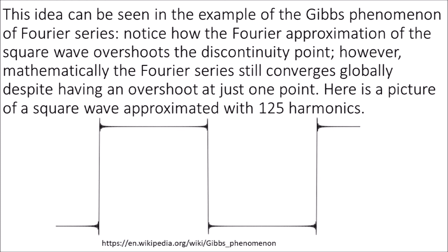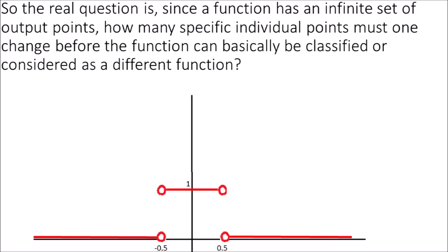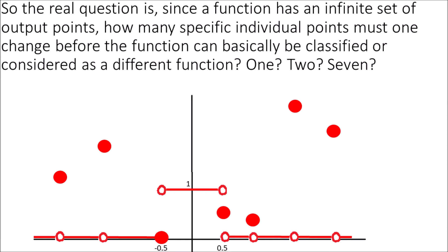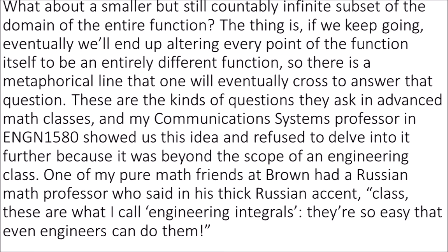This idea can be seen in the example of the Gibbs phenomenon of Fourier series. Notice how the Fourier approximation of the square wave overshoots the discontinuity point; however, mathematically the Fourier series still converges globally despite having an overshoot at just one point. Here is a picture of a square wave approximated with 125 harmonics. The real question is: since a function has an infinite set of output points, how many specific individual points must one change before the function can be classified as a different function? These are the kinds of questions they ask in advanced math classes, and my communication systems professor refused to delve further because it was beyond the scope of an engineering class.